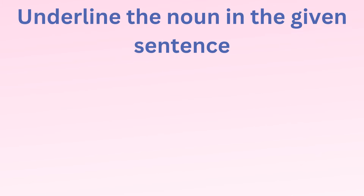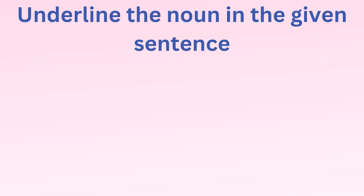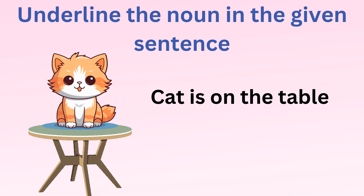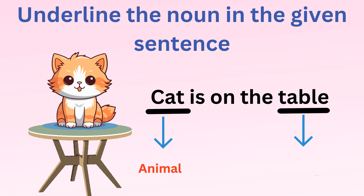Let's underline the noun in the given sentence. Cat is on the table. Here, cat is an animal, and table is a thing.